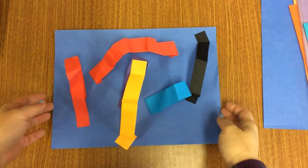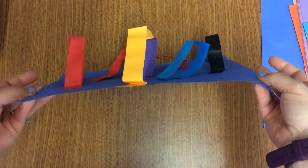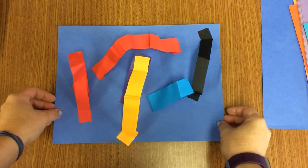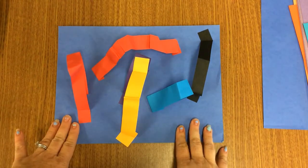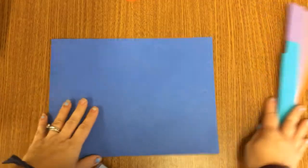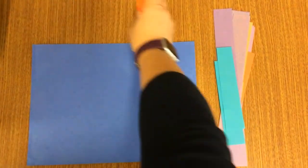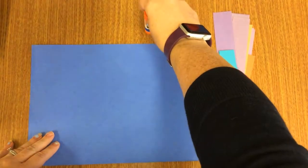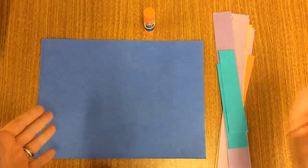Okay, so today we're going to be making our 3D sculptures with our lines. I'm going to show you a couple tricks on how to do that. The first thing you're going to need is a piece of paper, and then you're going to need your paper strips and a glue stick.